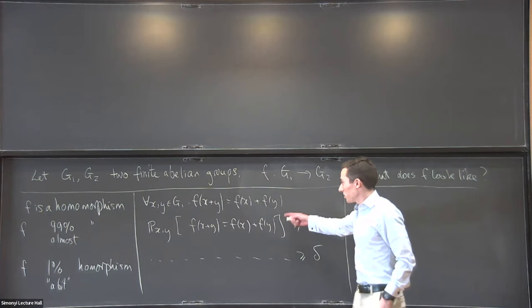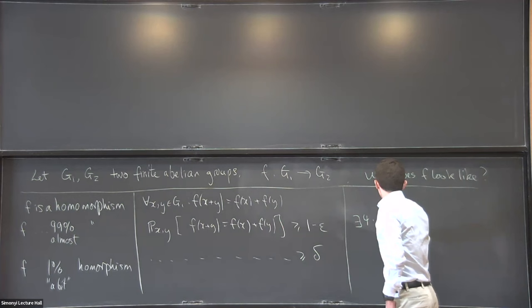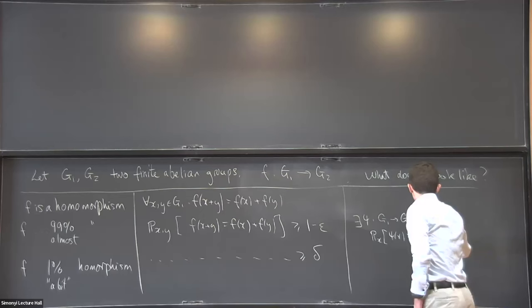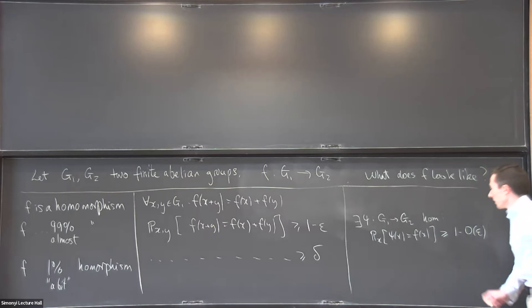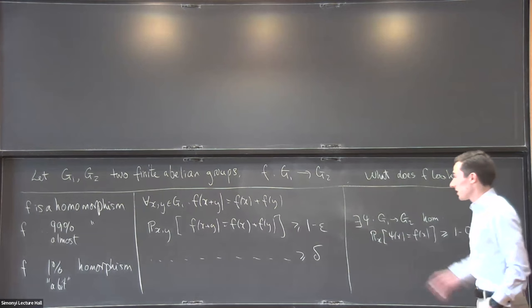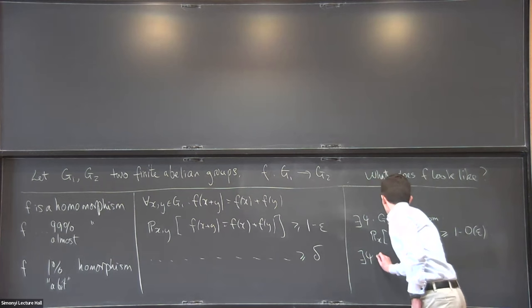I should say what the statement is. A natural way to find such a function is to start with a genuine homomorphism and then mess around with 1% of the entries — and that turns out to be the only thing you can do. So if this condition holds, then there exists a genuinely genuine homomorphism that agrees with f on most of its values. If you're almost a homomorphism in one sense, then you're almost a homomorphism in a pointwise sense.